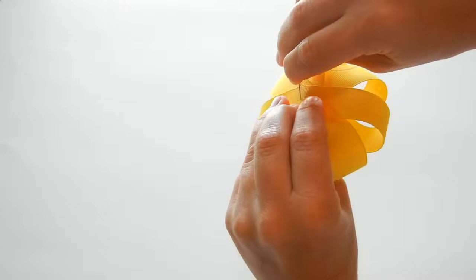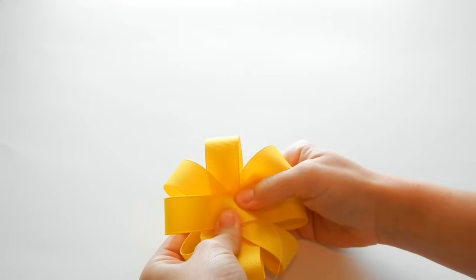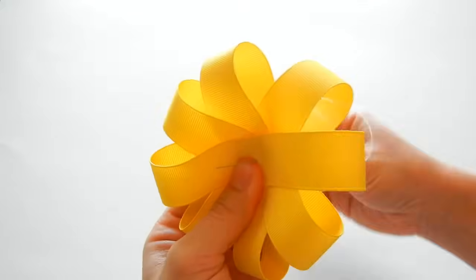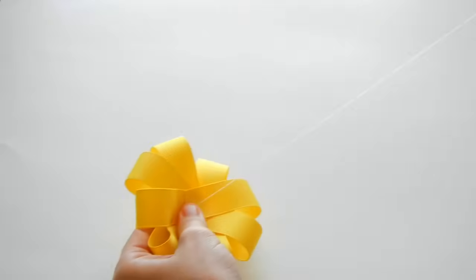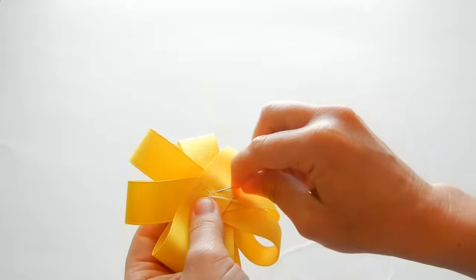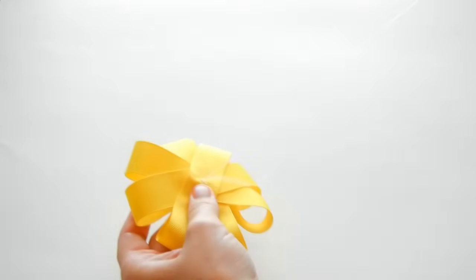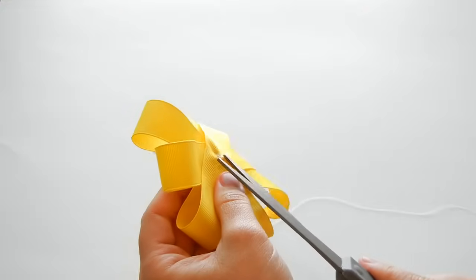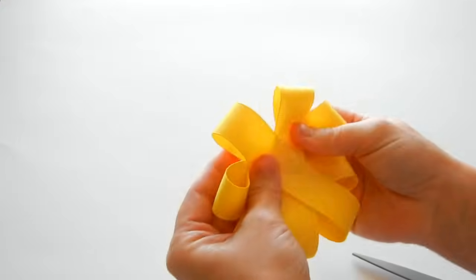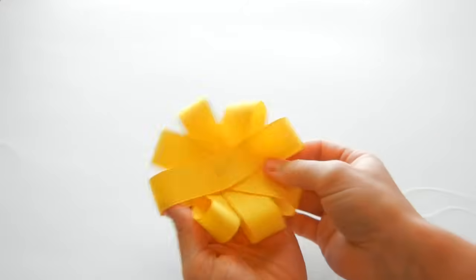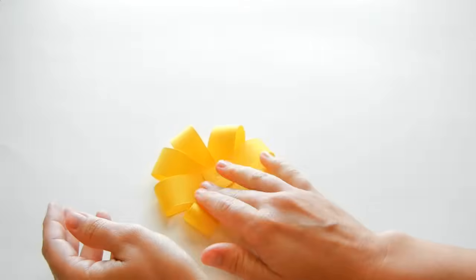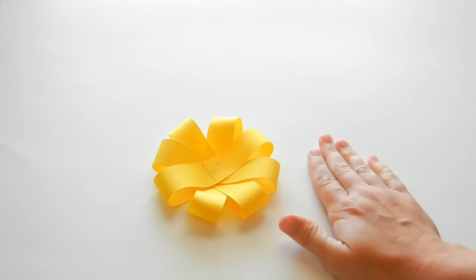We're just going to stitch it back and forth a few times to really hold the petals together, just taking a couple stitches in the back and trim the thread. This gives us our first layer of the flower loop bow. Using those pieces for your second layer, do the same exact thing that I just showed you.